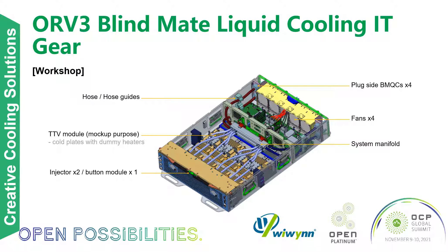From the ORV3 blind-mate liquid cooling IT gear workshop: what you see here is basically a chassis built for air-cooled that goes into an Open Rack V3 rack. We've converted this chassis to fit into liquid cooling. The components — the hose, hose guides, plug side, socket, TTV module, injection module, and system manifold — all of these were built by WeVin to make this chassis ready for liquid cooling. That's what you will see in that workshop.